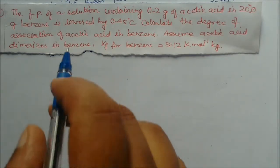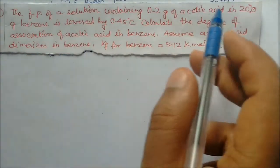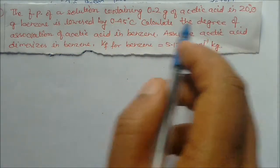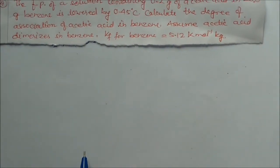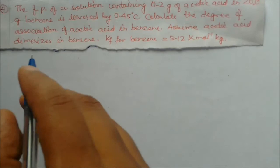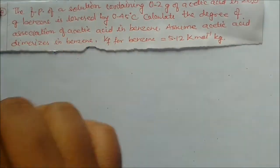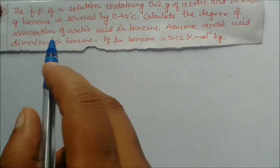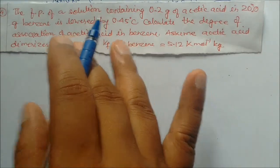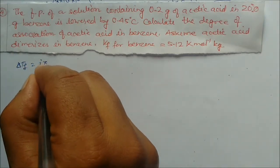Next problem: the freezing point of a solution containing 0.2 grams of acetic acid in 20 grams of benzene is lowered by 0.45°C. Calculate the degree of association of acetic acid in benzene. Assume acetic acid dimerizes. Kf for benzene is given. Since dimerization gives an abnormal molar mass, we need to find i in a different form.